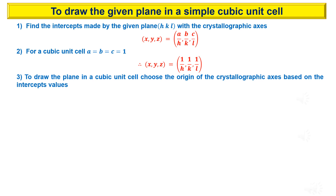In order to draw the given plane in a simple cubic unit cell, first find the intercepts made by the given plane with the crystallographic axes, then choose the origin of the crystallographic axes in the unit cell based on the intercepts values.